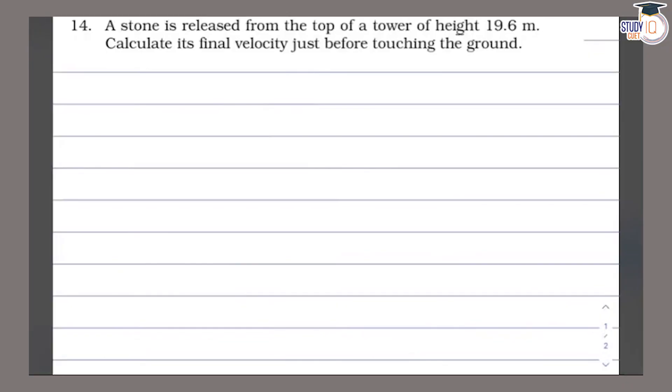This is question number 14, which is in class 9th NCERT chapter Gravitation. A stone is released from the top of a tower of height 19.6 meters. Calculate the final velocity just before reaching the ground.